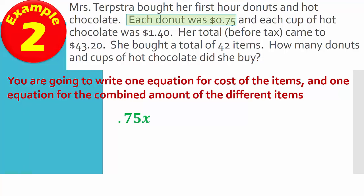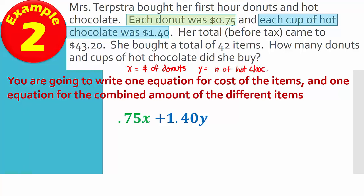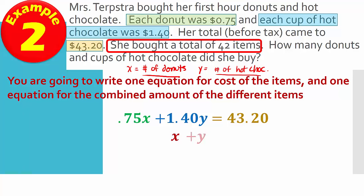So we've got the donuts being 0.75x, a cup of hot chocolate was $1.40y because we have x as the number of donuts and y as the number of cups of hot chocolate. So we'll just put number of hot chocolate. All right. And that's one equation and she spent $43.20. So now the next one, notice we don't have a similar situation. Now we just are told that she bought a total of 42 items. But if you look, x is the number of donuts and y is the number of hot chocolate. So when you combine those two, you get 42. Fairly straightforward.